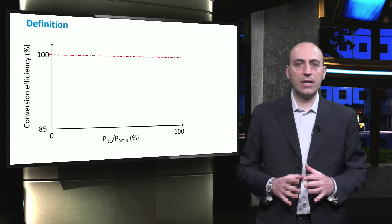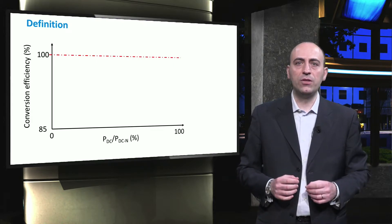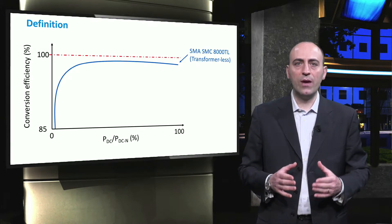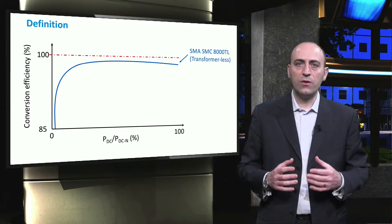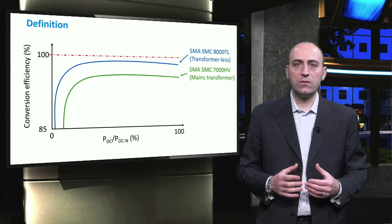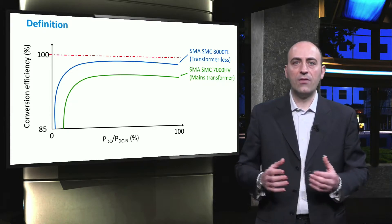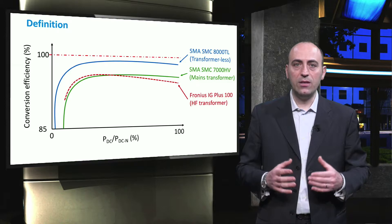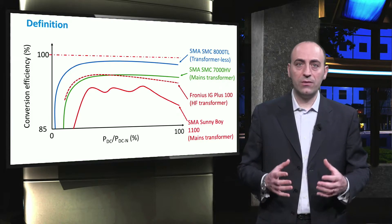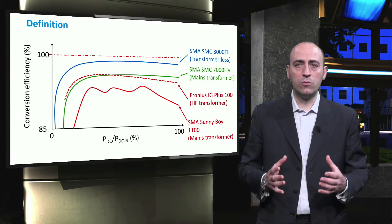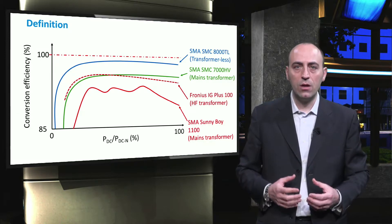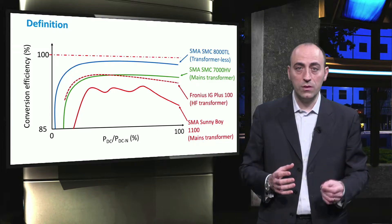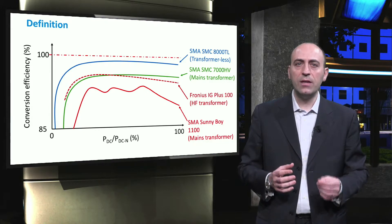Given that an inverter cannot be 100% efficient, a typical shape of the efficiency graph is the one shown in the slide. In this case, the behavior is referred to a transformer-less type of inverter. Different efficiencies can be found for different types and models of inverters, such as one with the mains transformer and the high-frequency transformer. It should be noted that every inverter and every manufacturer show a different behavior when it comes to efficiencies. This variety of patterns suggests that it is almost impossible to provide an analytical and unified model for the inverter efficiency. This explains why the inverter efficiency as a function of the input DC power for various DC voltage levels is usually given in the datasheet.